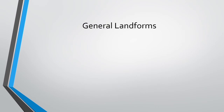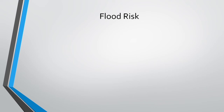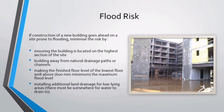General landforms are the building blocks of landscapes. Measuring the morphometric properties of landforms can help evaluate how and why the physical attributes of landscapes vary over time and space. If construction of a new building goes ahead on a site prone to flooding, minimize the risk by ensuring the building is located on the highest section of the site, building away from natural drainage paths or channels, and making the finished floor level well above the maximum flood level, with additional land drainage installed for low-lying areas.